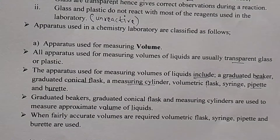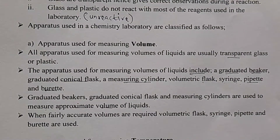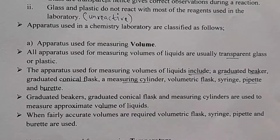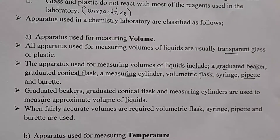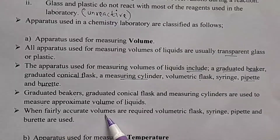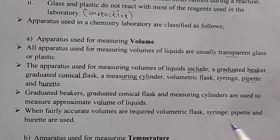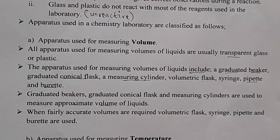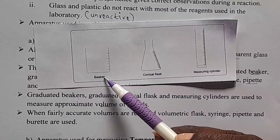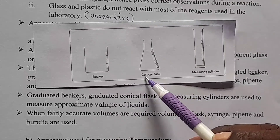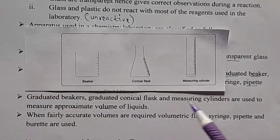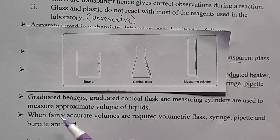During the exam, you may be asked to name two apparatus used for approximate measuring of volumes of liquids. The answer would be: graduated beaker, graduated conical flask, or measuring cylinder. In contrast, some apparatus are used when fairly accurate volumes are required. When fairly accurate volumes are required, volumetric flask, syringe, pipette, and burette are used. These are the three for approximate volume: graduated beaker, graduated conical flask, and measuring cylinder.